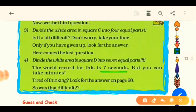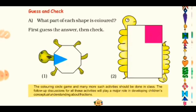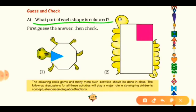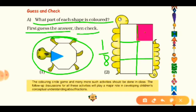Now topic two: Guess and Check. First, guess what fraction of each shape is colored, then check. Here you can see a tortoise whose cover is like an octagon. One part is colored, so write 1 upon the total. The second shape is a rectangle — draw division lines to see all equal parts. There are six total parts and one is colored, so it is 1/6.